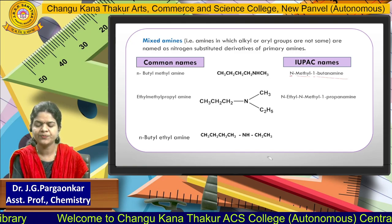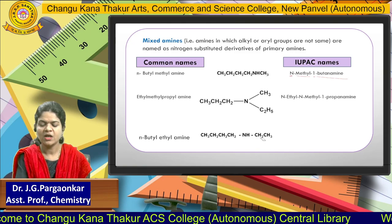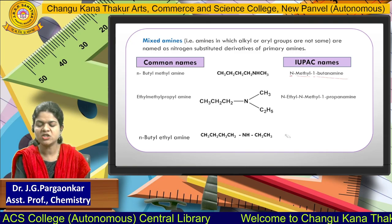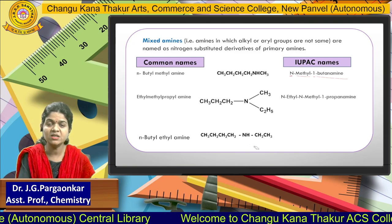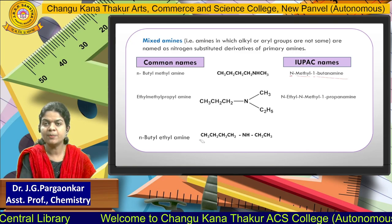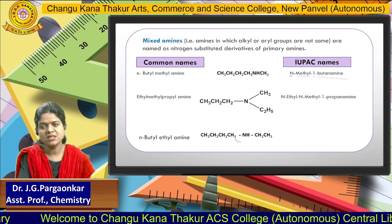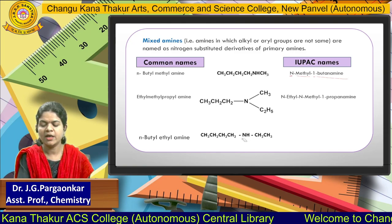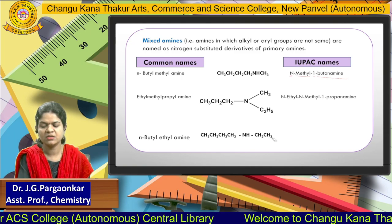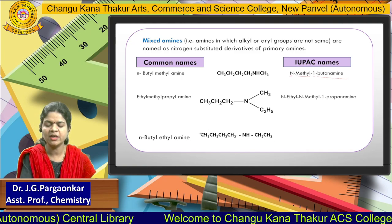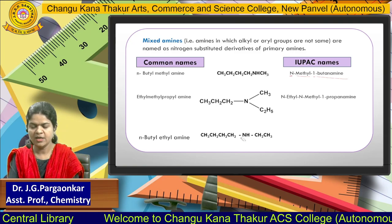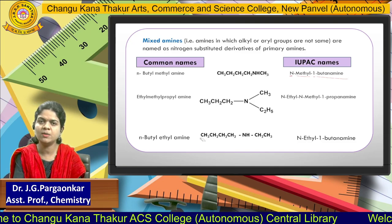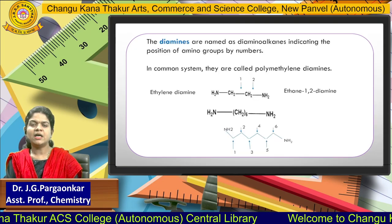For the next structure, similar to the first example: at one end it is the ethyl group and at the other side it is the butyl group. The butyl group will be the parent hydrocarbon — from that, E is replaced by amine. Numbering gives one, two, three, four, so it is N-ethyl-1-butanamine. Let's check: yes, N-ethyl-1-butanamine.